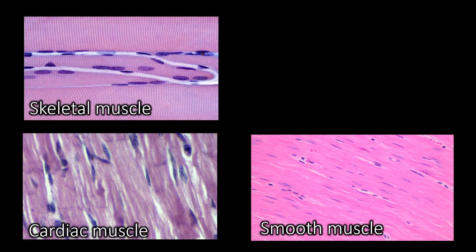When trying to differentiate muscle types, first you should ask yourself: is it striated? Striations are just these light and dark stripes that you see very clearly in skeletal muscle. As soon as it is striated, you know it must either be skeletal or cardiac.